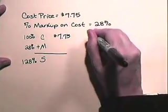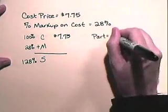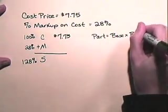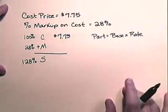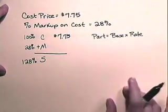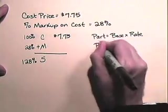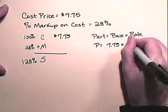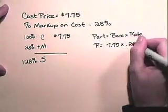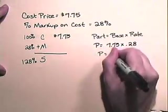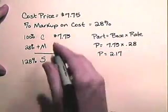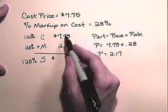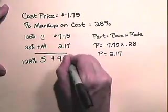So now we need to find the part. The part is always equal to base times rate. In this case, the part is the markup. The base is the cost. And the rate is 28%. So the part is $2.17. So the markup is $2.17, and the selling price is cost plus markup, which is $9.92.